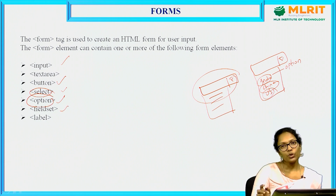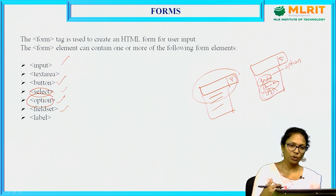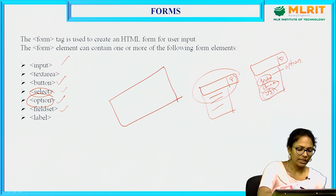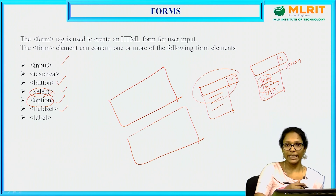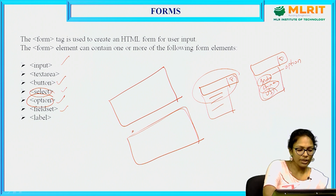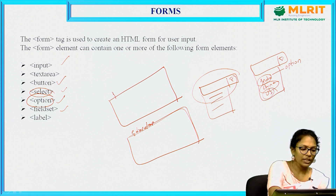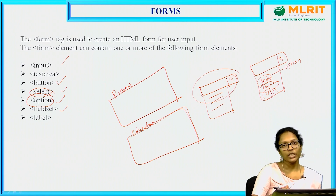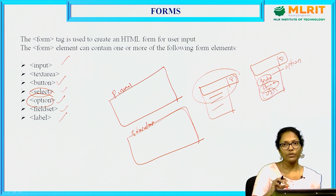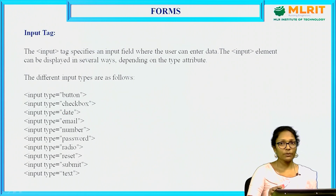Next is fieldset. Using fieldset, you can differentiate the application into different groups. For example, I can create a box for personal details — username, password, gender — and another box for educational details like SSC, inter percentage. You give each box a name: one as 'personal' and the other as 'education'. Like that you can differentiate the sections in your form using fieldset. And label — if you want to give the name of a text field or input field, you use the label tag.